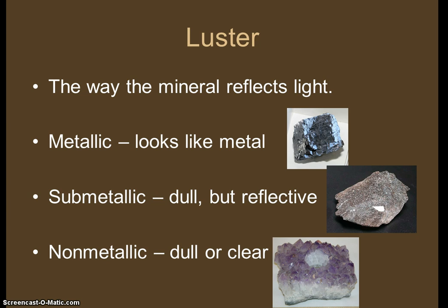Luster is the way that the mineral reflects light. We have three types: metallic, submetallic, and nonmetallic. Think about the first part of that word — metal — it looks like metal. The one on the right looks like silver, so it has a metallic luster. Submetallic means it's dull in most areas but still has a little bit of shine, so it's kind of in the middle. Nonmetallic means it's completely dull — it looks like a rock, or it's clear and looks like glass. You can see those amethyst crystals and kind of see through each one — it's glassy.